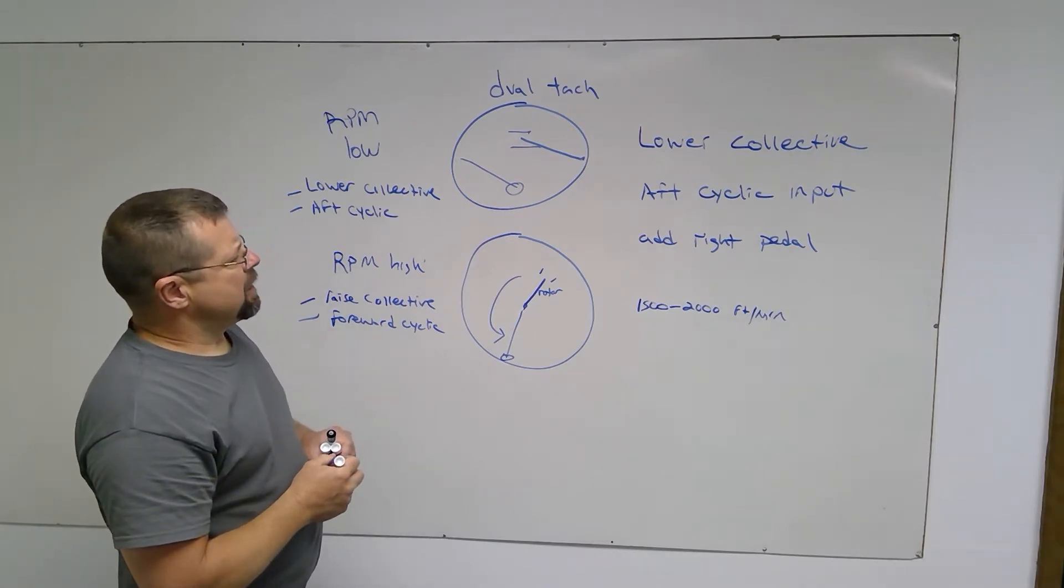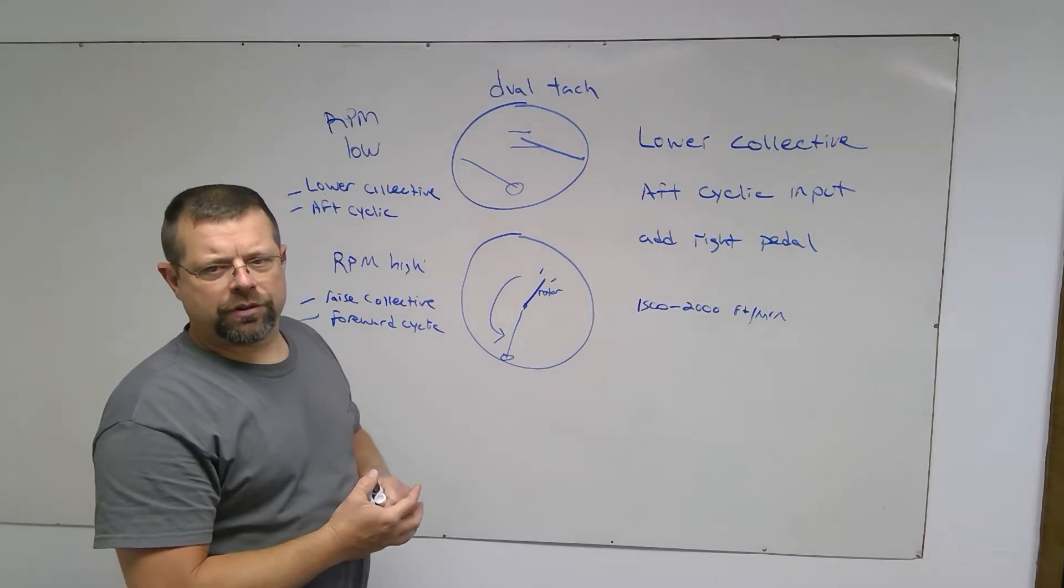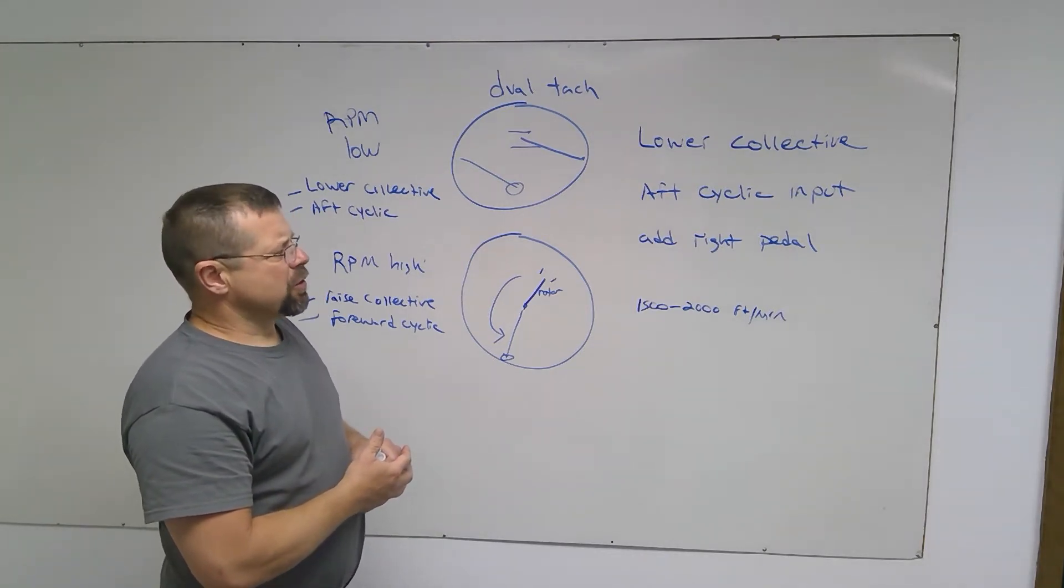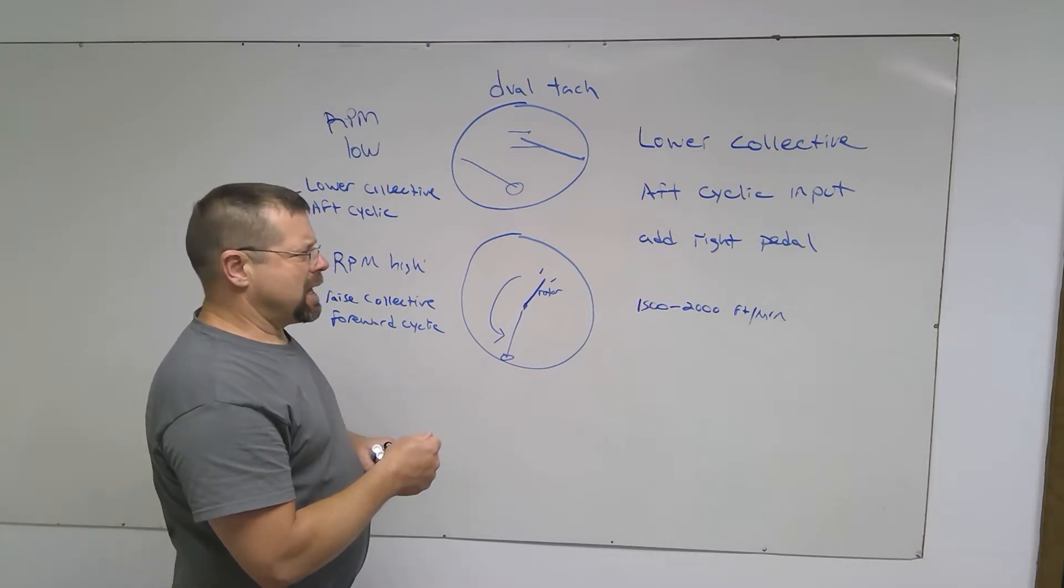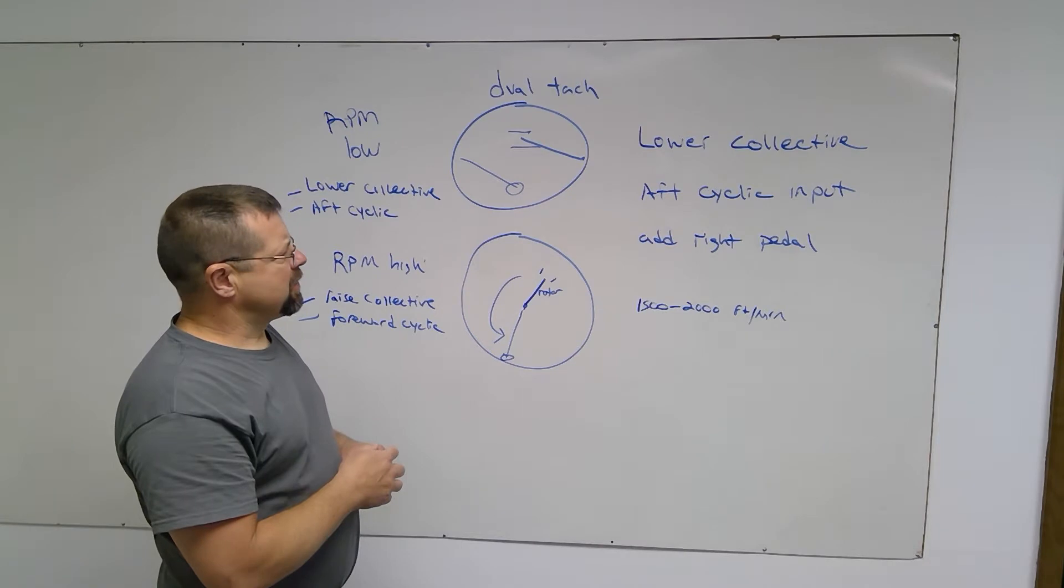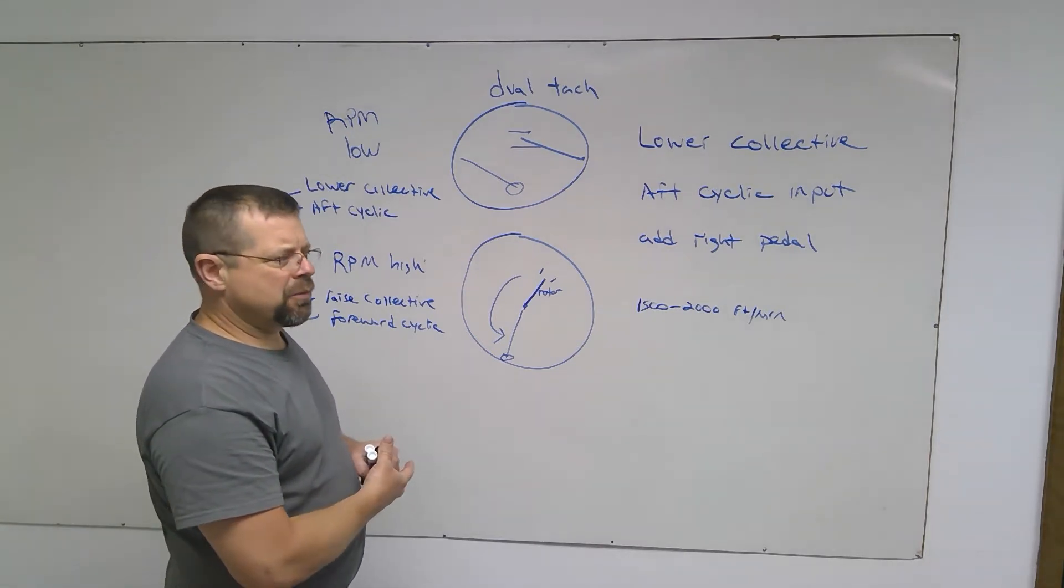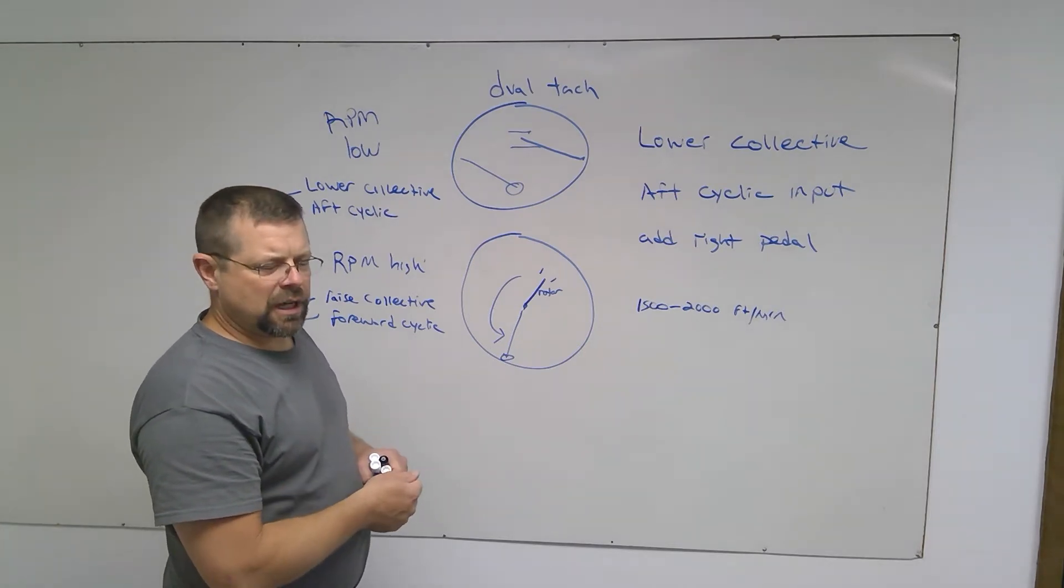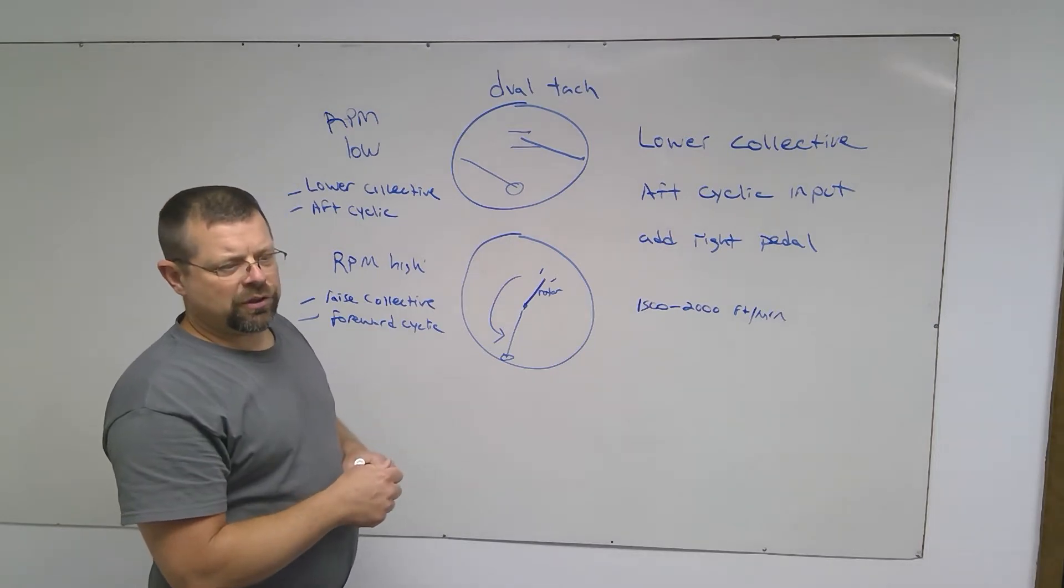Now, one thing they taught us at the Robinson safety course was that when teaching autorotations to a student, not right off the bat, but into the training some, it is a good idea to have the student control the RPMs in some of the autorotations just with the collective, and then in some autorotations just with the cyclic.